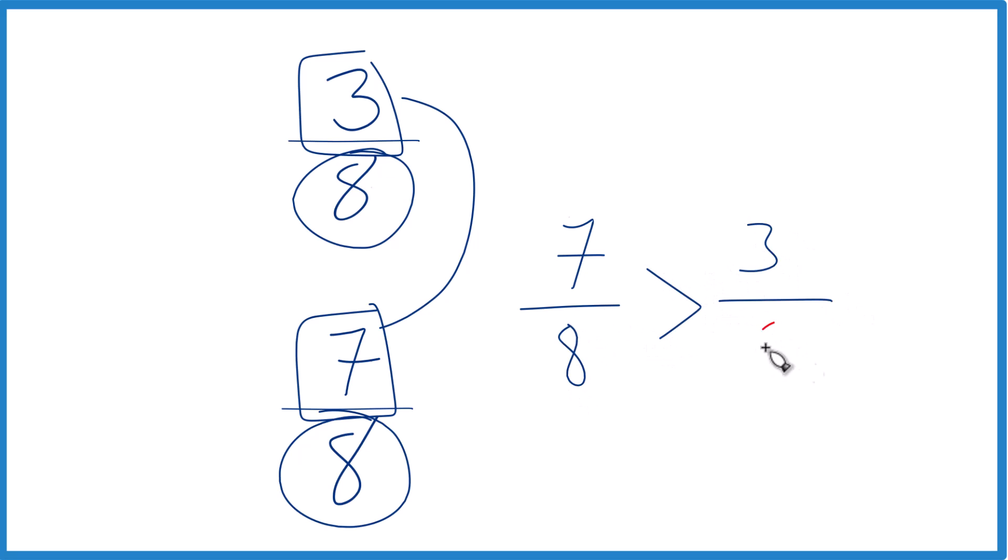And that's what you'd find if you put it into a calculator and got a decimal - 7/8 is greater than 3/8. That's it, it's pretty easy when the denominator is the same, you just compare the numerators.